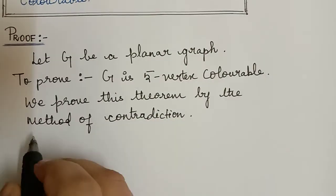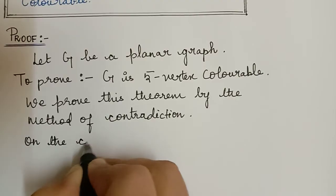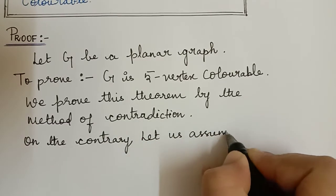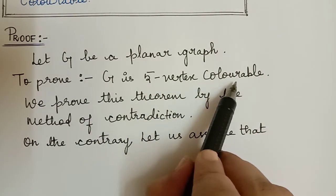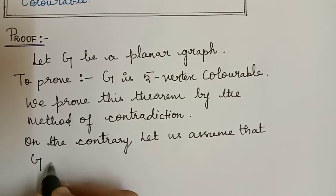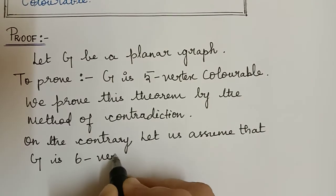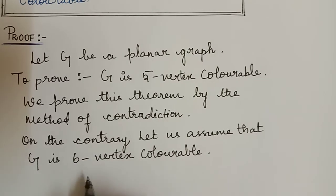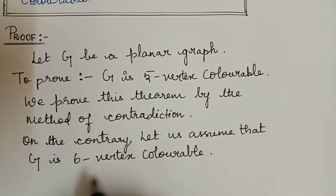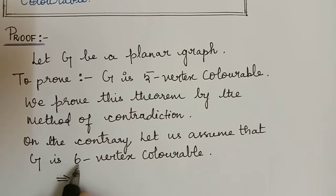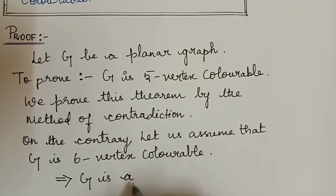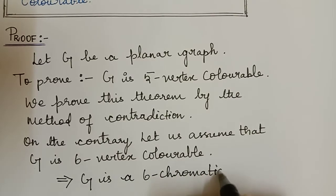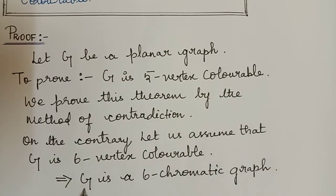On the contrary, let us assume that G is not five-vertex colorable. Instead, let us assume that G is six-vertex colorable and not five-vertex colorable. Because G is six-vertex colorable, we can say that the chromatic number of G is six, and so G is a six-chromatic graph.